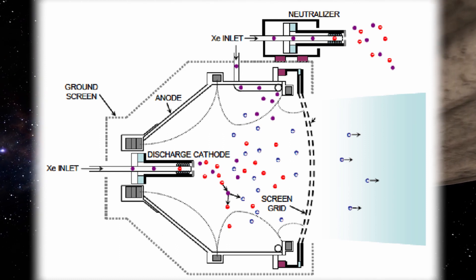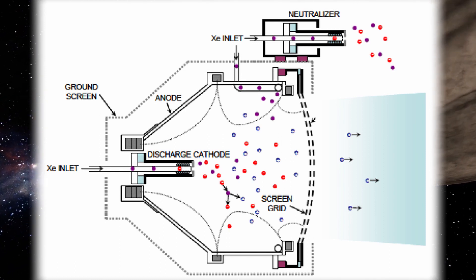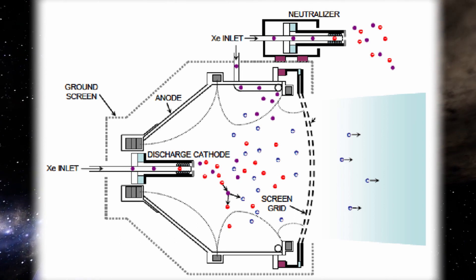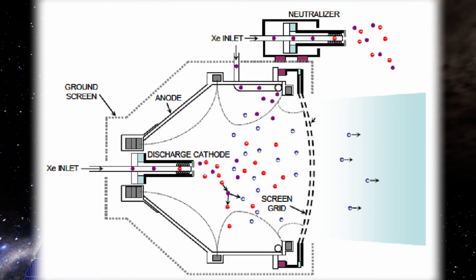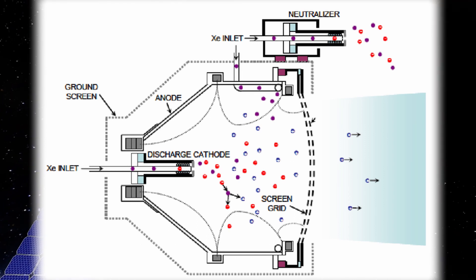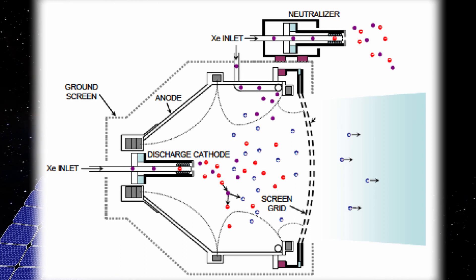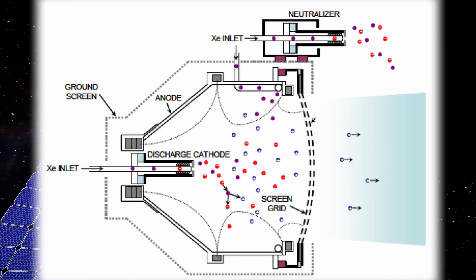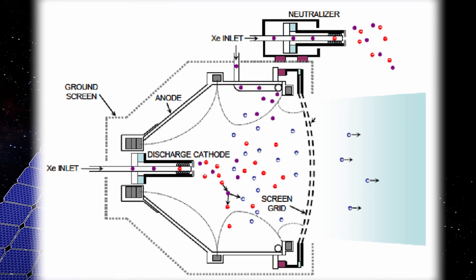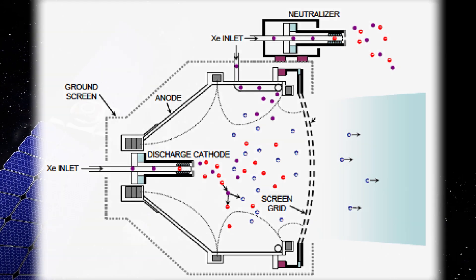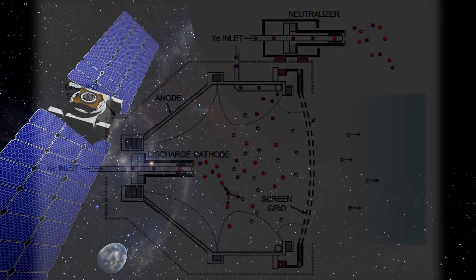Once they're past the negative grid, a second beam of electrons is shot into the exhaust, neutralizing the xenon atoms before they have a chance to turn around and become re-attracted back to that negative grid. This creates a stream of ionized plasma which generates thrust and accelerates our craft.